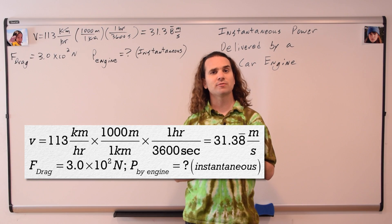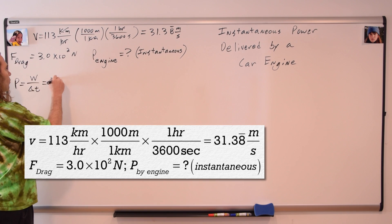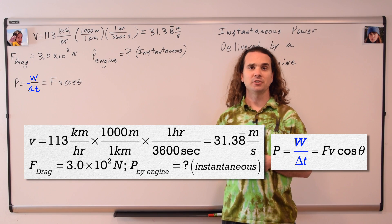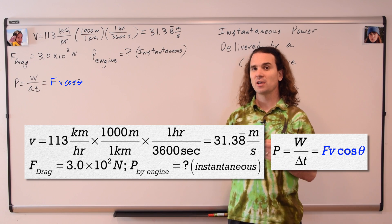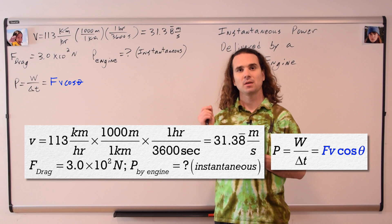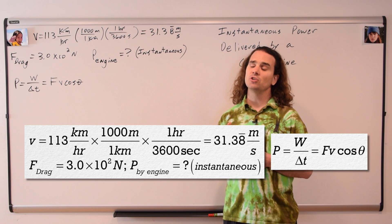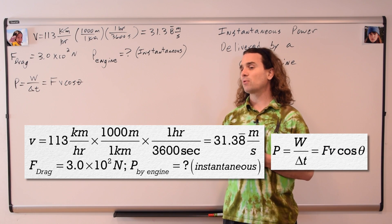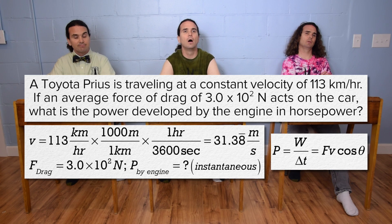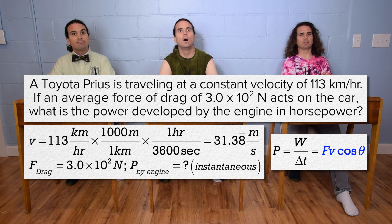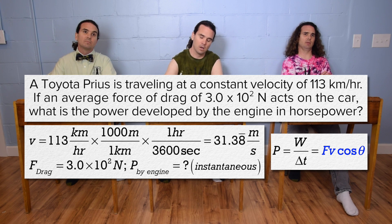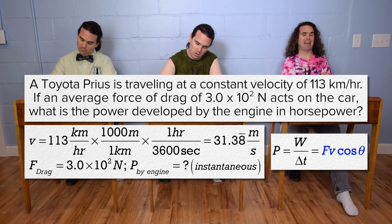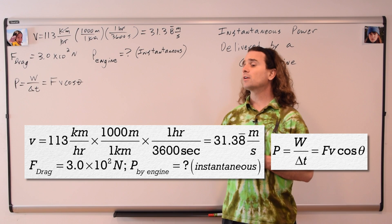We have two equations for power. They are power equals work over change in time and power equals force times velocity times the cosine of the angle between the direction of the force and the direction of the velocity. Bo, which equation are we going to use to solve for the instantaneous power delivered by the car engine? We have to use the second one, power equals force times velocity times cosine theta, because the other one only gives us average power. Bo, you are correct.